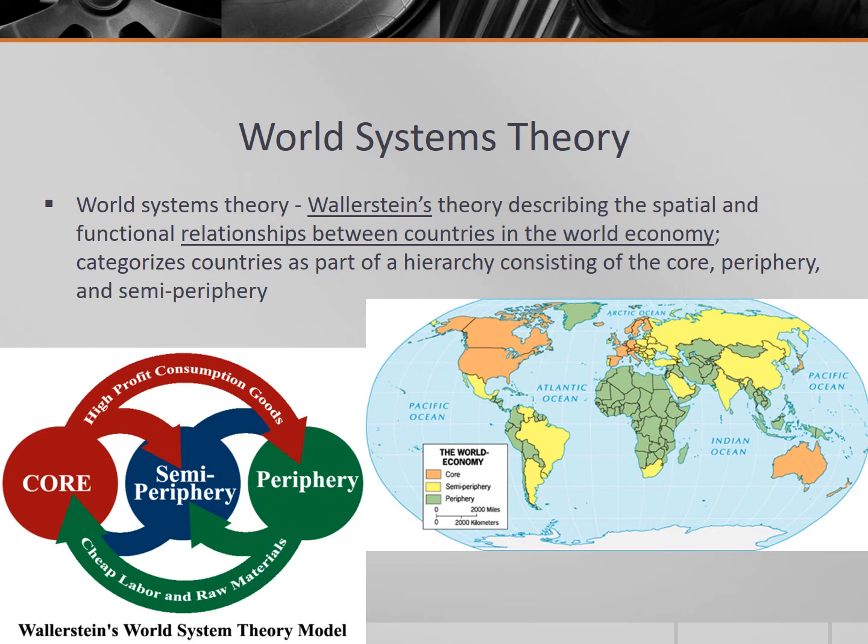Wallerstein argued that countries do not develop in isolation, but rather that they are dependent on one another. Unlike Rostow, who suggested that every country could reach the highest level of development, Wallerstein argued that there will always be a combination of countries with sharp social and economic gaps in development. And Wallerstein believed that the capitalist world economy was the cause of uneven economic development, in stark contrast to Rostow, who believed that capitalism was the reason that countries would continue to improve.